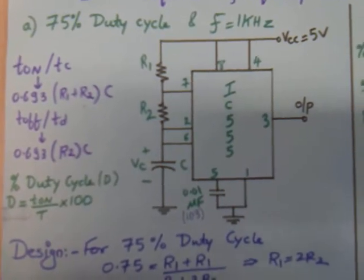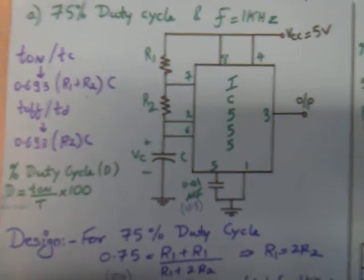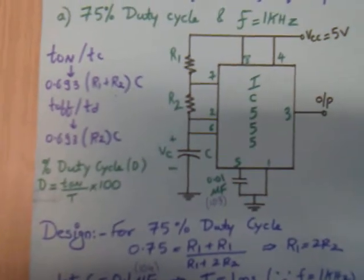Connect the configuration of 555 timer with the external components R1, R2, C and supply 5 volts.